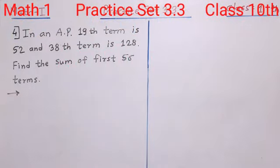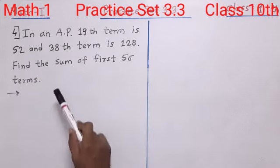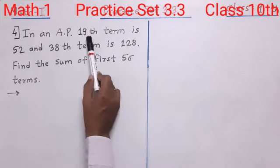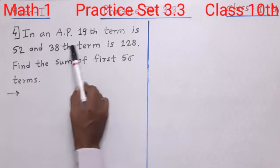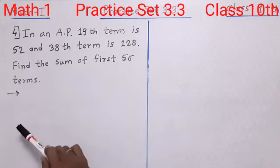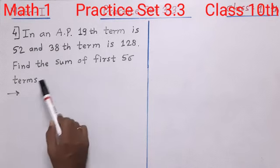Hello dear students, welcome to the new lecture of mathematics part 1. As you know, we are continuing practice set 3.3. See question number 4 here. In an arithmetic progression, the 19th term is 52 and the 38th term is 128. Find the sum of the first 56 terms.